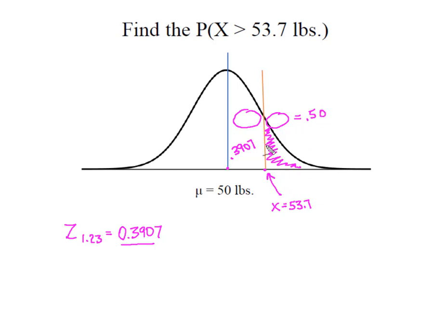I only want this small tail of the curve, and so in this case I'm going to have to take my 0.5 and subtract the area I don't want, which is my 0.3907, to isolate that area in the tail of the curve, which is going to give me 0.1093.